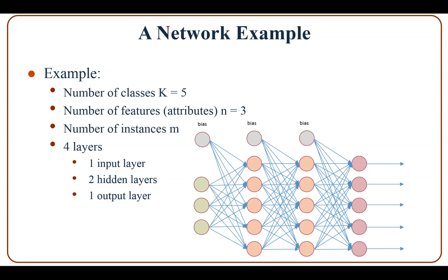Now we look at an example of a network. In this example, given a training dataset, the number of classes k is equal to 5, the number of features or attributes n is equal to 3, and the number of instances or examples is M. The system consists of four layers: one input layer, two hidden layers, and one output layer.